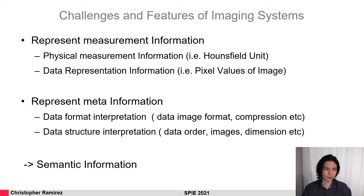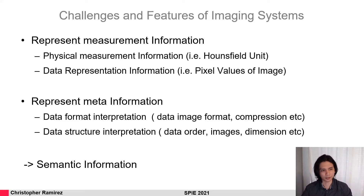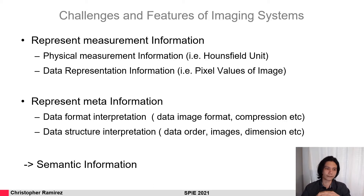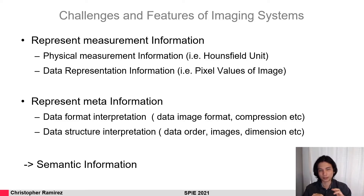Sometimes physical values are not directly represented, but some kind of direct data representation is used — the direct image — meaning some kind of pixel value or intensity values that are directly stored into the dataset. To interpret this and to know what we're looking at, we need some kind of meta information: the data format. So what do the bytes mean? Is the data compressed? What kind of image format are we looking at — is it a PNG or a JPEG or something else entirely?